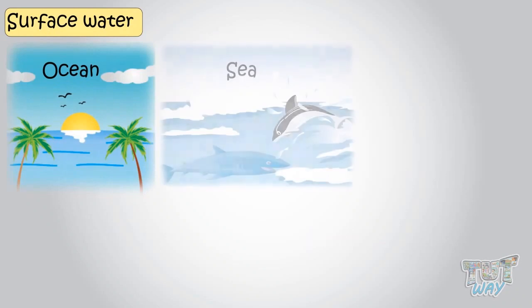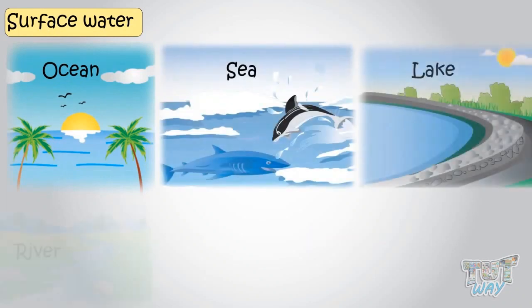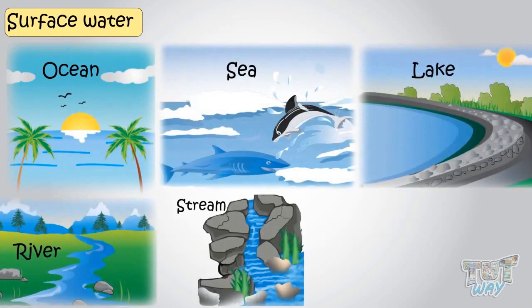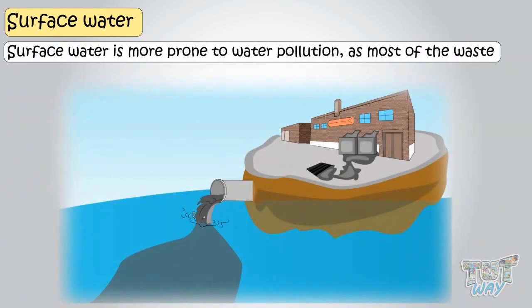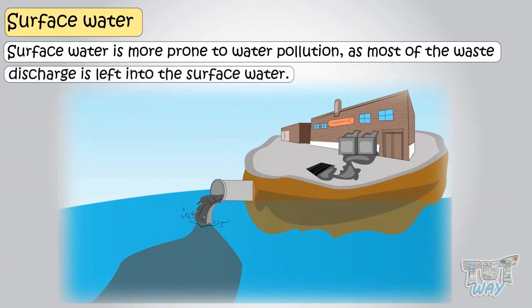All the water bodies like ocean, seas, lakes, rivers, streams, and ponds are surface waters, that is, they exist on the surface of Earth. Surface waters are more prone to water pollution, as most of the waste discharge is left into the surface waters.